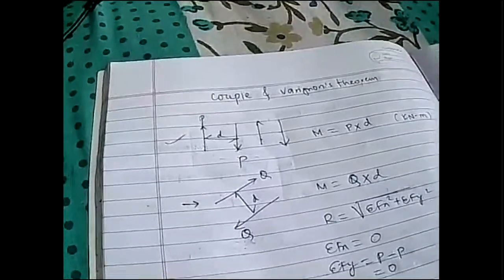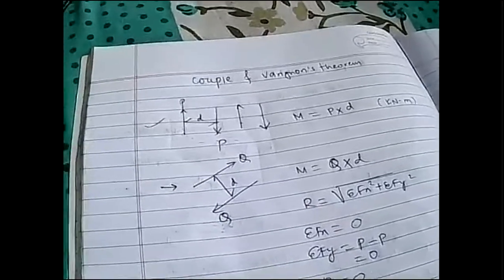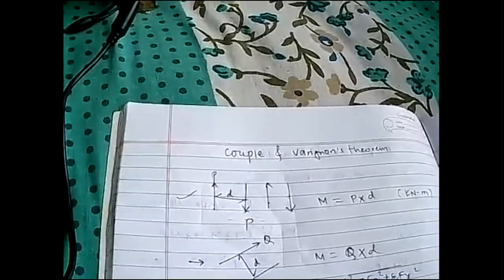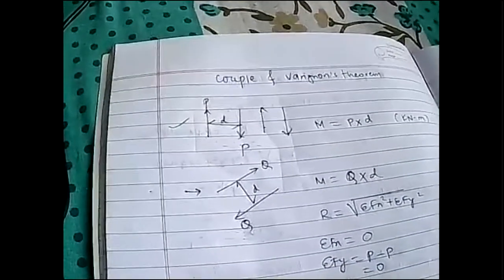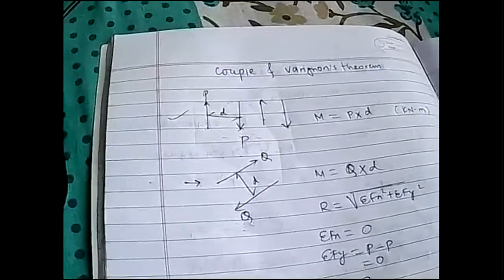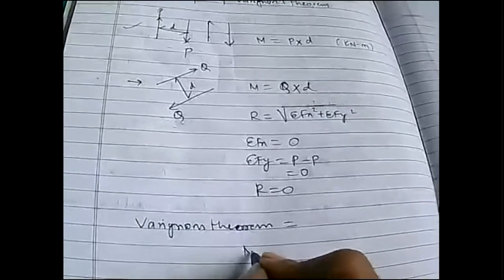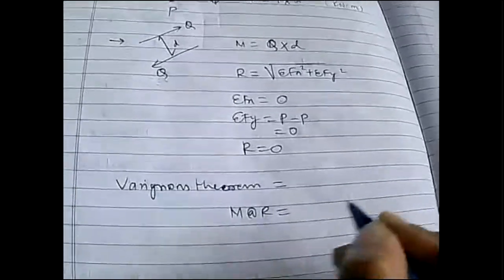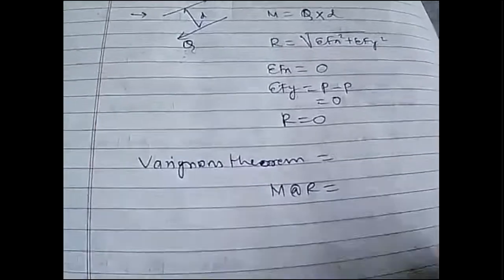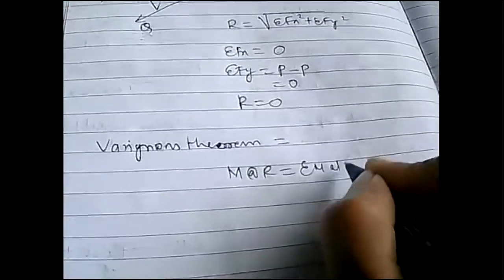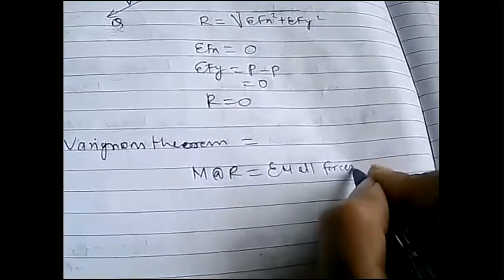Now we'll learn about Varignon's theorem. The formula states: the moment of a resultant about a specific point is equal to the summation of moments of all forces about the same point.